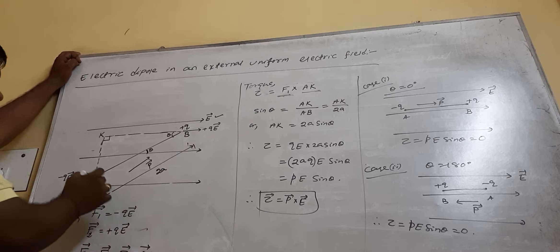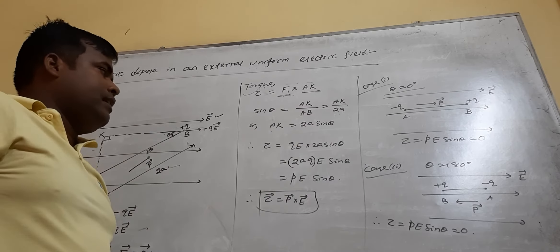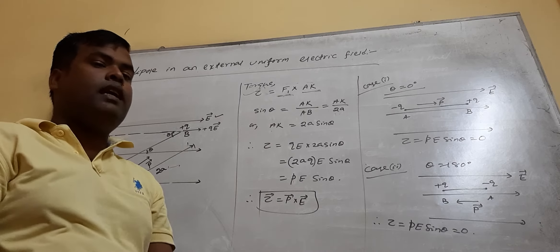Taking force F1 and the perpendicular distance between the lines of action: the line of action of plus QE and minus QE gives perpendicular distance AK. So tau equals F1 into AK. Now, what is AK? Looking at triangle ABK — if the angle at B is theta, then by alternate angles, the angle is also theta. In the right-angled triangle ABK, sin theta equals AK divided by AB. AB is the full length of the dipole, that is 2A. So AK equals 2A sin theta. Therefore, tau equals QE times 2A sin theta.